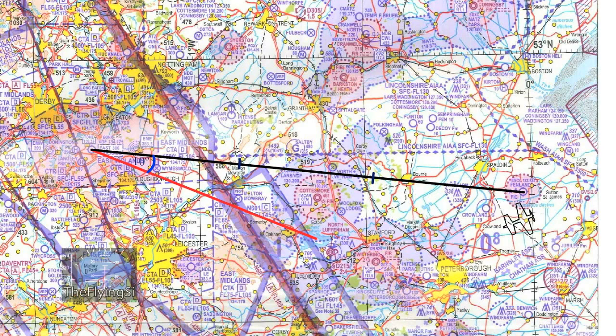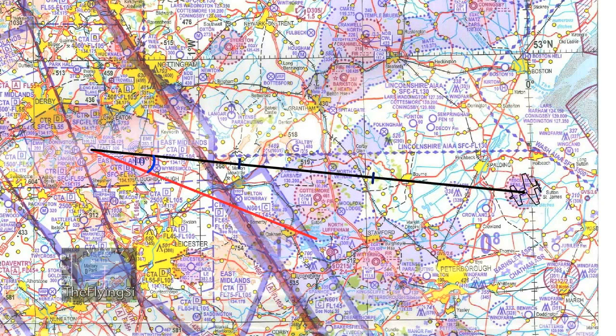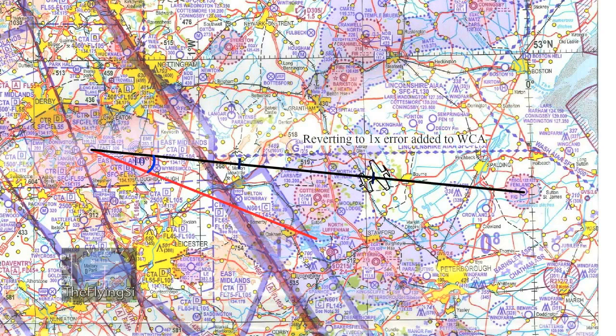What if there isn't a suitable checkpoint until after halfway along the track? That would be a problem because if you put on double drift after the halfway point you won't get back on track before you reach your intended destination. However, there is a simple solution: triple drift. If your checkpoint is after the halfway point, apply triple drift and fly that for the suitable amount of time — specifically, fly triple drift for half the period that you've already flown. So if after 10 minutes the error is 5 degrees, you fly 15 degrees correction for 5 minutes and then revert to the single drift correction of 5 degrees.